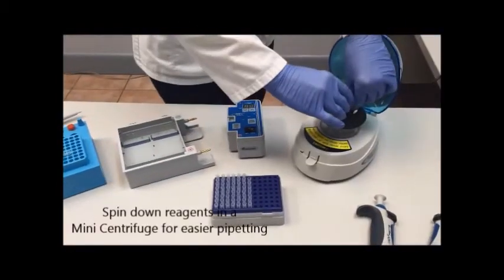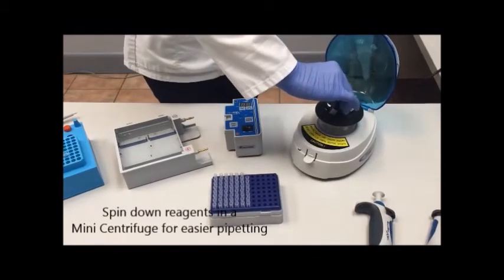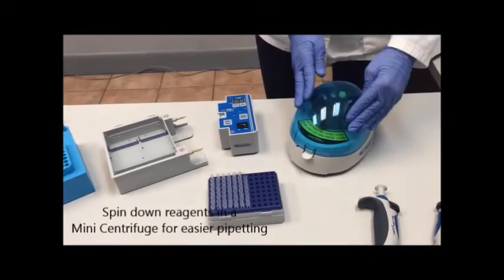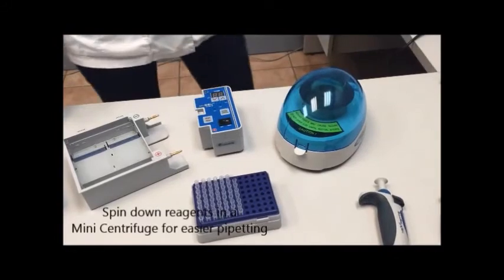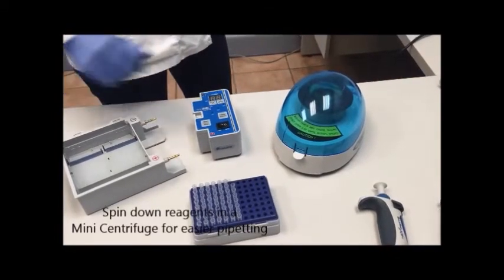The next step is to prepare the reagents. First, we spin them down in a mini centrifuge. This brings all of the reagents to the bottom of the tubes for easier pipetting.